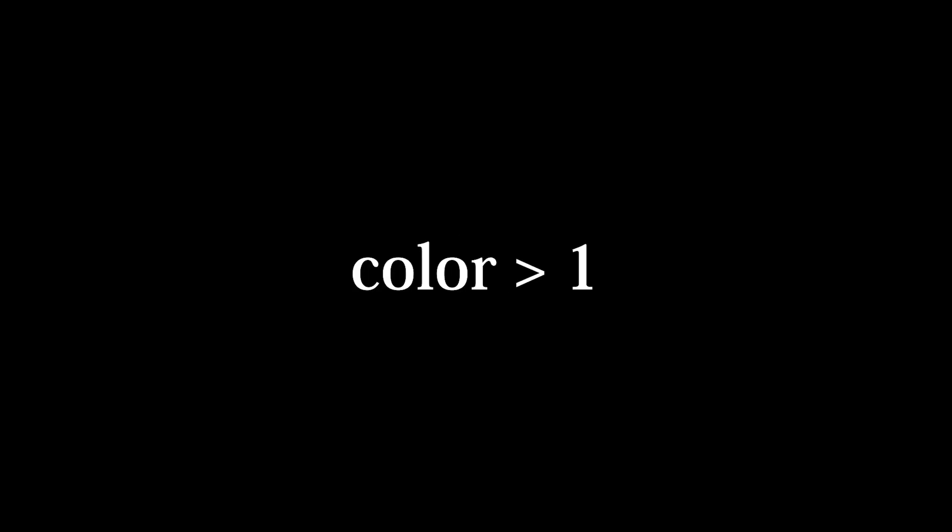The simplest tone mapper is no tone mapper, also known as RGB clamping. If any color exceeds 1, we clamp it to 1 and move on. This is obviously not optimal for several reasons: brighter colors lose their hue and are clamped to white, and bright areas lose almost all of their detail.